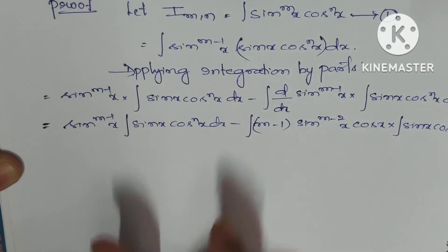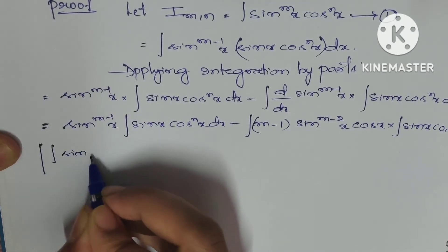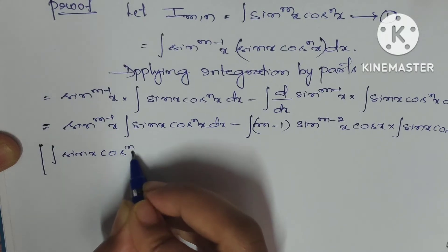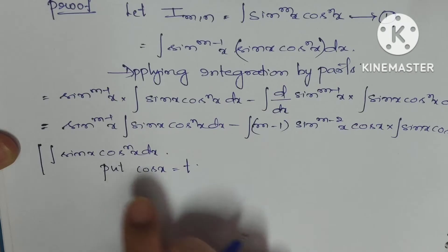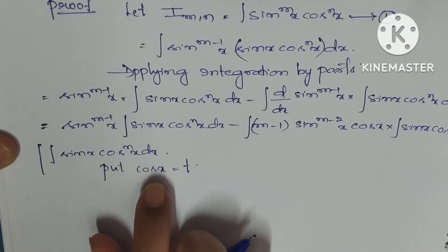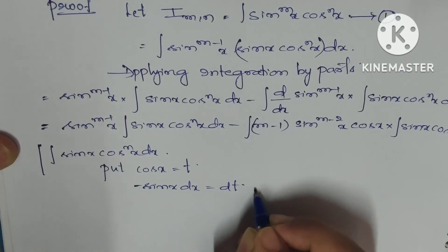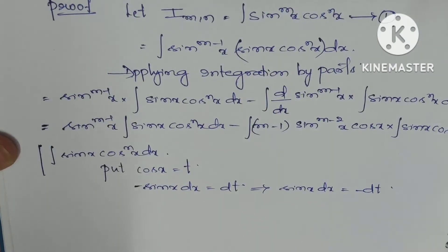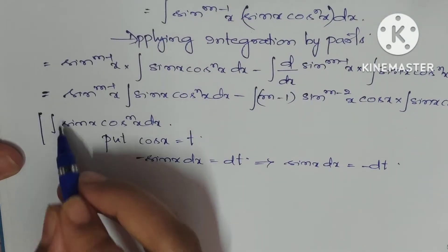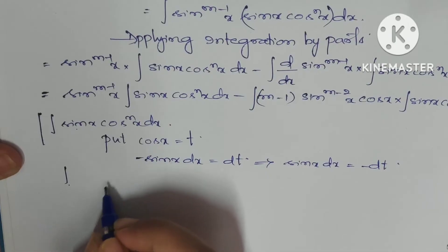We have to find this inner integral separately: ∫sin(x)·cos^n(x) dx. To evaluate this, we use substitution. Put cos(x) = t, so differentiation gives -sin(x) dx = dt, which implies sin(x) dx = -dt.